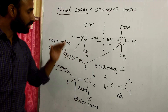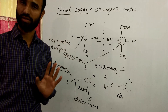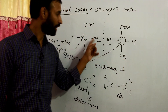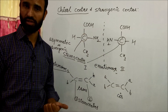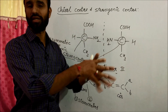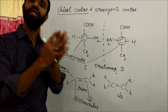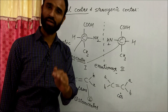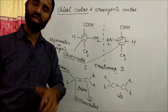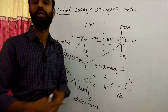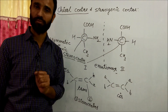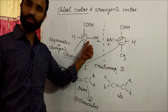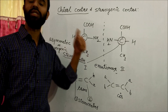All stereogenic centers are not chiral centers. Only those stereogenic centers which give an enantiomer on exchange of groups are known as chiral centers. So all chiral centers are stereogenic centers, but all stereogenic centers are not chiral centers. Stereogenic center is a general term, but chiral center is a specific term used for enantiomers only. A stereogenic center may be sp2 or sp3 hybridized, but a chiral center is always sp3 hybridized.